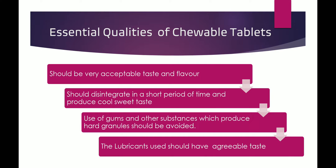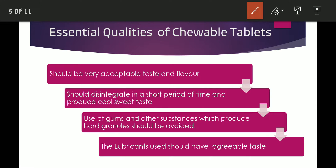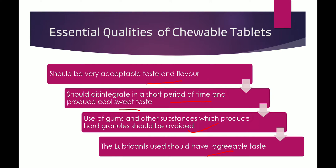The essential qualities which make a chewable tablet a good one are: it should have acceptable taste and flavor — sweetening agents and base are added to enhance taste; it should have good color to make it attractive; it should disintegrate in a short period of time and produce a cool sweet taste. The use of gums and other substances which produce hard granules should be avoided, as disintegration must be very fast. The lubricants used should also have an agreeable taste.